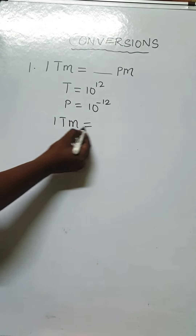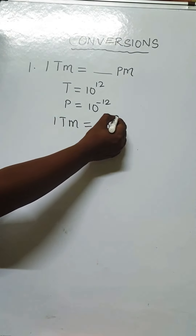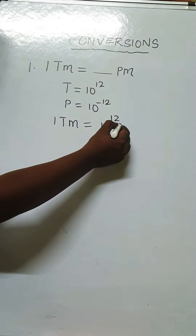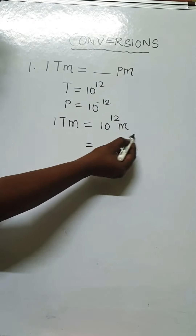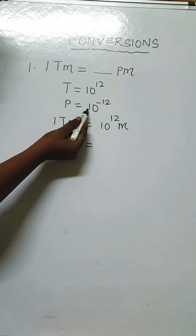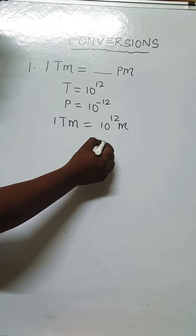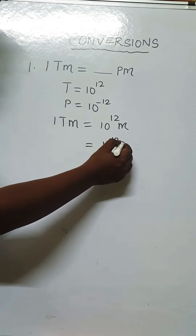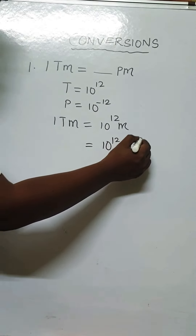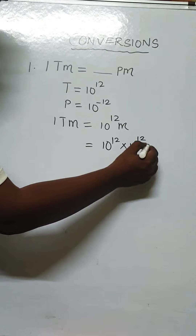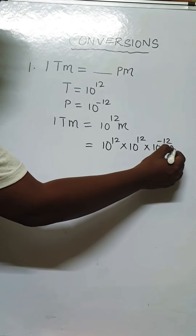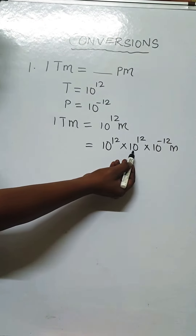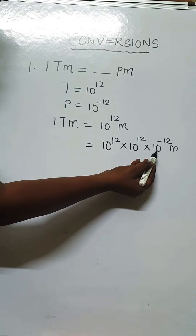In the place of tera, I am writing 10 power 12 meters. Now, as we have to convert into pico, and there is no pico here, the pico value is 10 power minus 12. So what we have to do is multiply with 10 power 12 and 10 power minus 12. The reason we multiply with 10 power minus 12 and 10 power 12 is because we need 10 power minus 12, which represents pico.